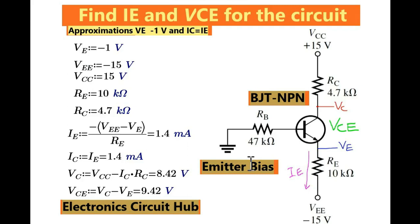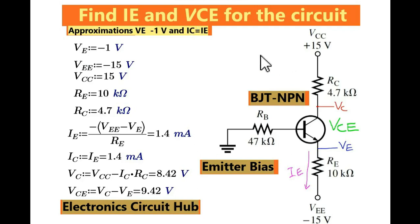Before you solve this numerical, you have to understand the types of configuration used in the circuit. This is basically an emitter biased configuration, and in this circuit you are asked to find out the value of IE and VCE. You have also been given the approximation VBE equals minus 1 volt, and IC equals IE. You can also assume the current gain beta of this circuit is given by 150.